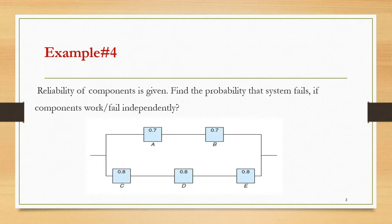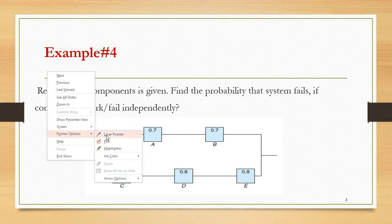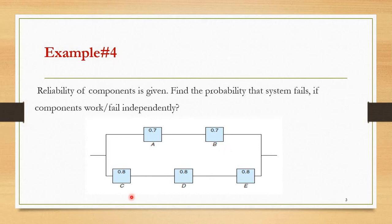Example number 4. Reliability of components is given. Find the probability that the system fails if components work or fail independently. We have a system with five components A, B, C, D, and E, each with its working probability: P(A) = 0.7, P(B) = 0.7, P(C) = 0.8, P(D) = 0.8, P(E) = 0.8.